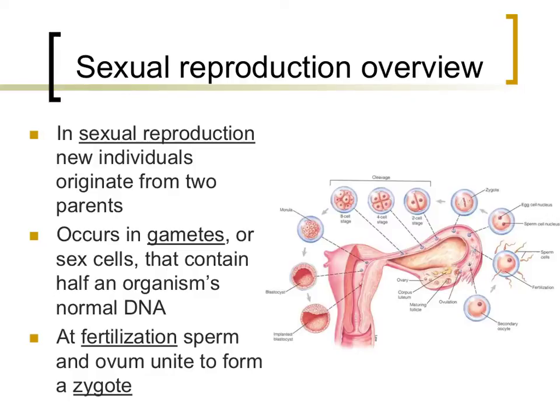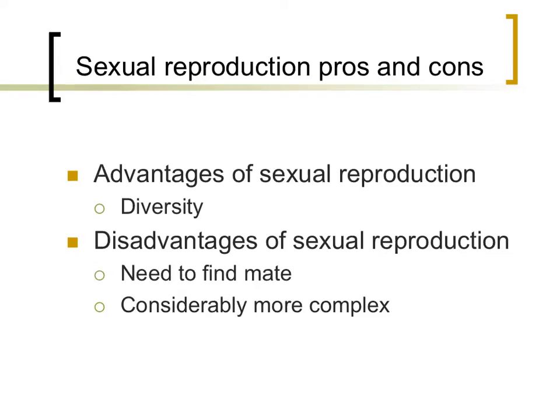These types of cells contain half of the normal DNA that is typically found in cells. Fertilization is the process by which sperm and egg unite in humans to form what is called a zygote. The process of fertilization and the formation of a zygote is shown in the picture to the right. This process occurs in the uterine, or fallopian tubes, and is illustrated here. One of the most important benefits is that unique offspring are produced. Since two parents are involved, each of which donate half of their DNA to the new organism, the new organism is different than either of its parents.